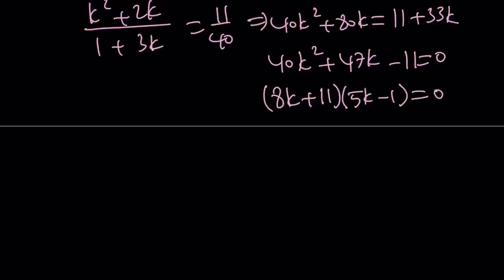This is factorable as 8k plus 11 times 5k minus 1 equals 0. From here, we can find the values of k very easily. k is either negative 11 over 8 or k equals 1 fifth.